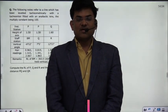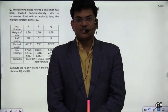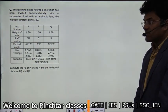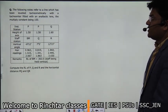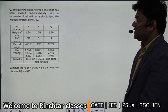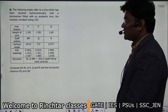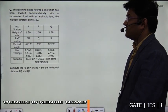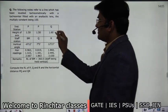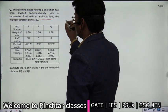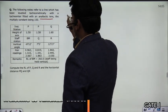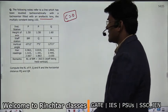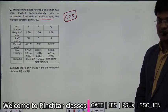Hello everyone, welcome to your InstaGlasses. In today's session, we are going to discuss one important problem on surveying that is based on tachymetric surveying. This is a question with the tachymeter fitted with an analytic lens. Whenever this keyword comes, you understand the additive constant. The value of the additive constant is 0 — whenever the analytic lens is given, that means the additive constant is 0.